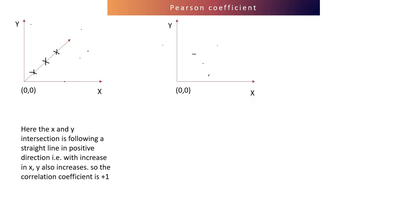Let's take another example. Here we also have data points forming a best-fitted straight line, but with a difference: every unit change in x impacts y in a negative way. If we decrease x by one unit, then y increases by one unit and vice versa. So here x and y have a negative correlation, which is minus one.